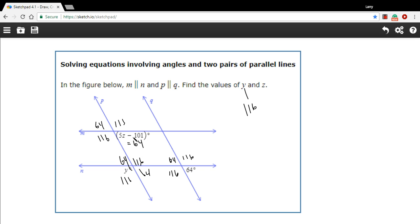Let's solve the other part. We've got, we know this angle equals 64, and they're saying it equals 5z minus 101. So we can set that up as an equation. So 5 times z minus 101 equals 64.